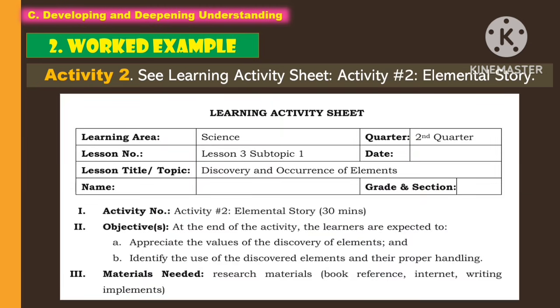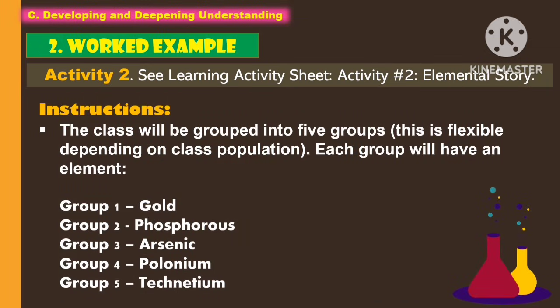Another part of the work example is to accomplish activity number 2. See the learning activity sheet, and students will accomplish the elemental story. For the objectives, at the end of the activity, learners are expected to: A — appropriately value the use of the discovery of elements, and B — identify the use of the discovered elements under prior handling. For the instructions, the class will group into 5 groups. Each group will have an element: group 1, gold; group 2, phosphorus; group 3, arsenic; group 4, polonium; and group 5, technetium.